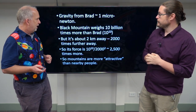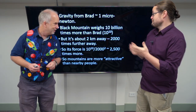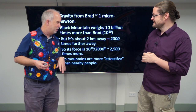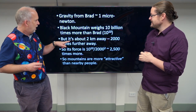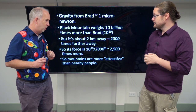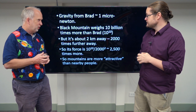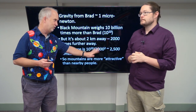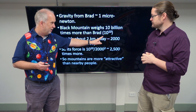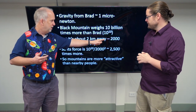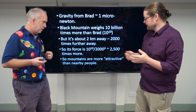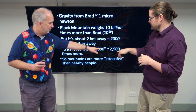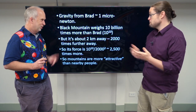If you do the figures, by my estimate Black Mountain weighs about 10 billion times more than you, just assuming its height, width, and the typical density of rock — about 5,000 to 6,000 kilograms per cubic meter. But it's about 2 kilometers away, which is about 2,000 times further away than you are, and gravity drops as the square of the distance. So 2,000 squared is 4 million times less gravity. Ten billion divided by 4 million means it's still about 2,500 times more force than me — about one tenth of a mosquito.